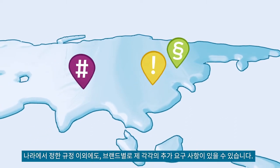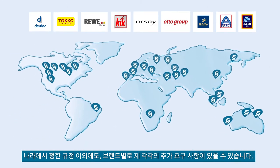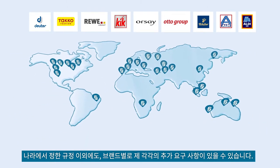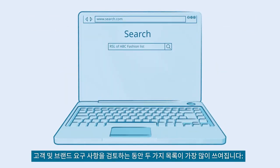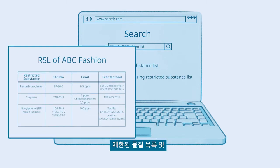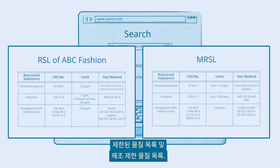In addition to national regulations, customers such as fashion brands may have further requirements. While reviewing customer and brand requirements, you may come across two different lists: the Restricted Substance List and the Manufacturing Restricted Substance List.